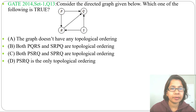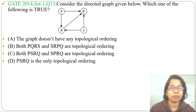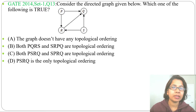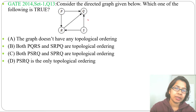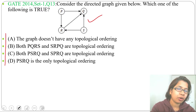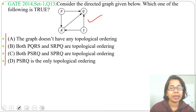Let's solve a previous question on topological sort. This question was asked in GATE 2014 Set 1, Question 13: consider the directed graph given below — which one of the following is true? Four options are given. Let's check them one by one.